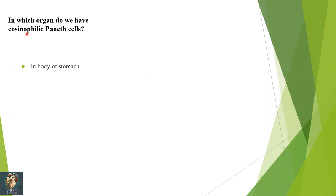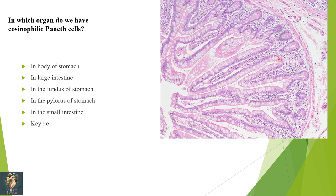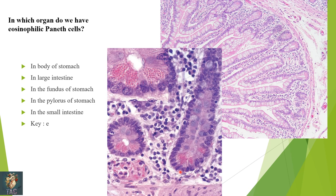Next: in which organ do we have eosinophilic Paneth cells — body of stomach, large intestine, fundus of stomach, pylorus of stomach, or small intestine? Correct option is small intestine. In this diagram you can see the intestinal glands in the lamina propria, and at the base of the glands are Paneth cells which contain lysosomal enzymes. These Paneth cells have special staining characteristics because of granules containing lysosomal enzymes, and are present in the small intestine.